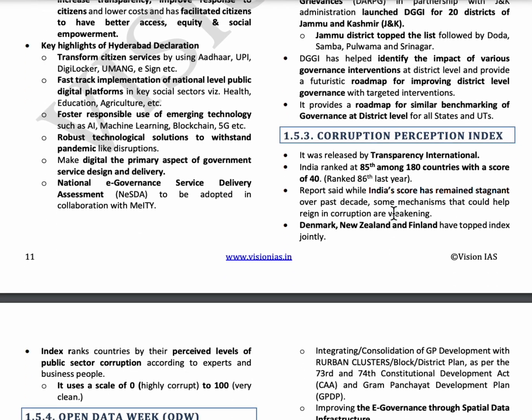The next topic is the Corruption Perception Index. This index was released by Transparency International, and India was ranked 85th out of 180 countries. The countries which topped this index are Denmark, New Zealand, and Finland.